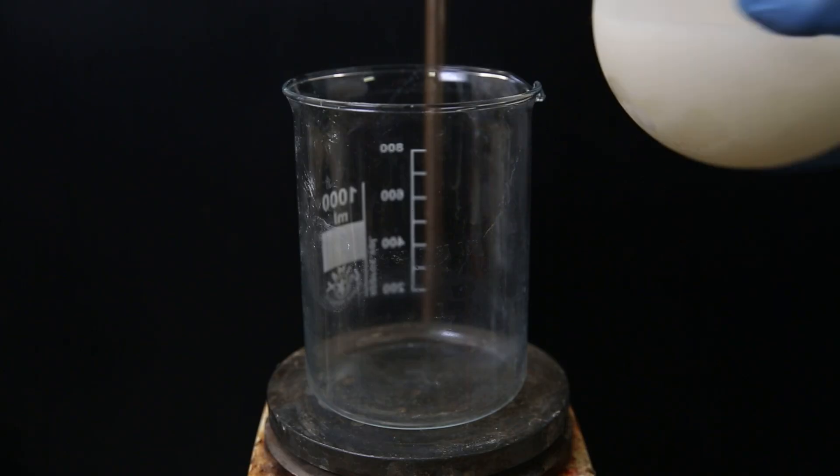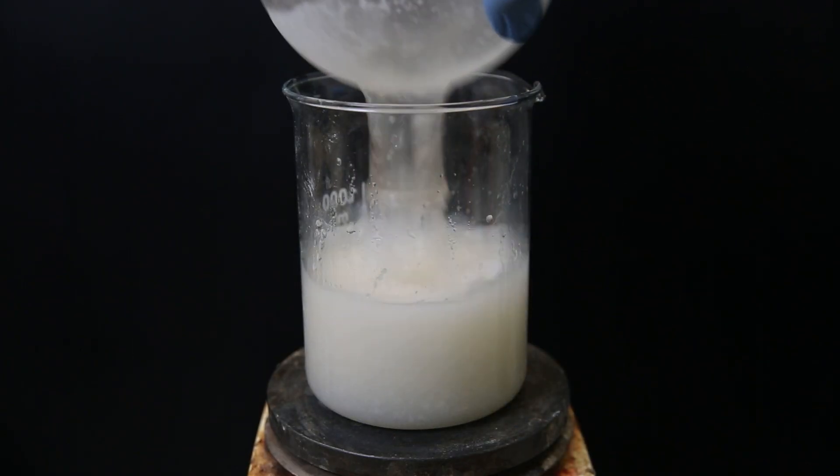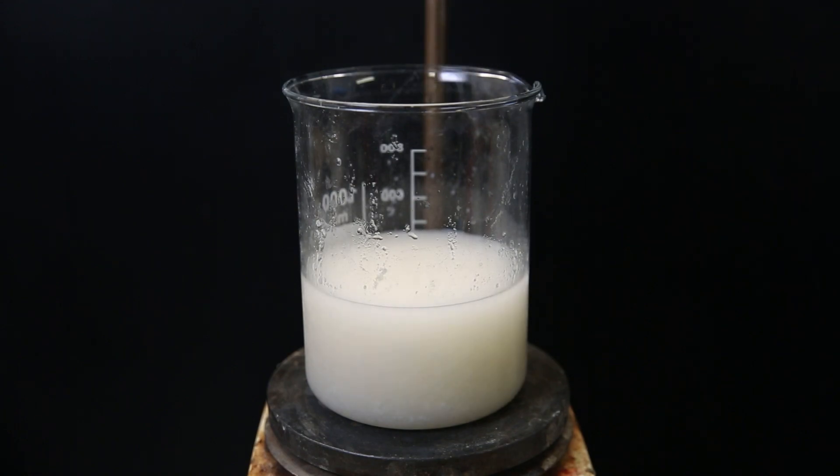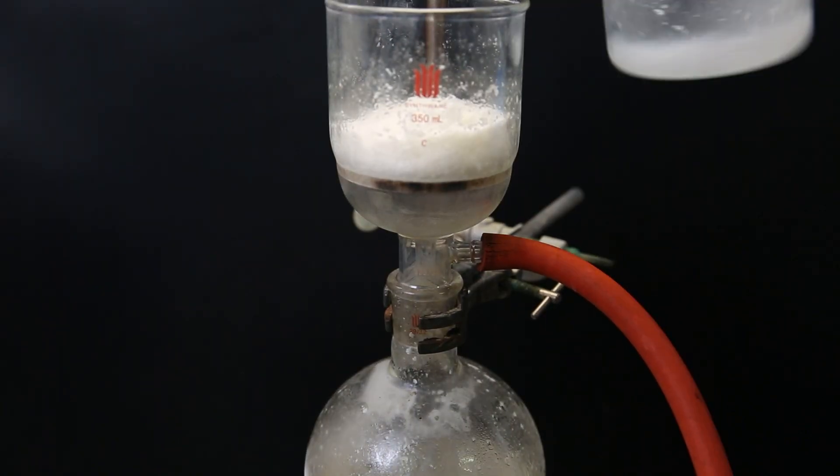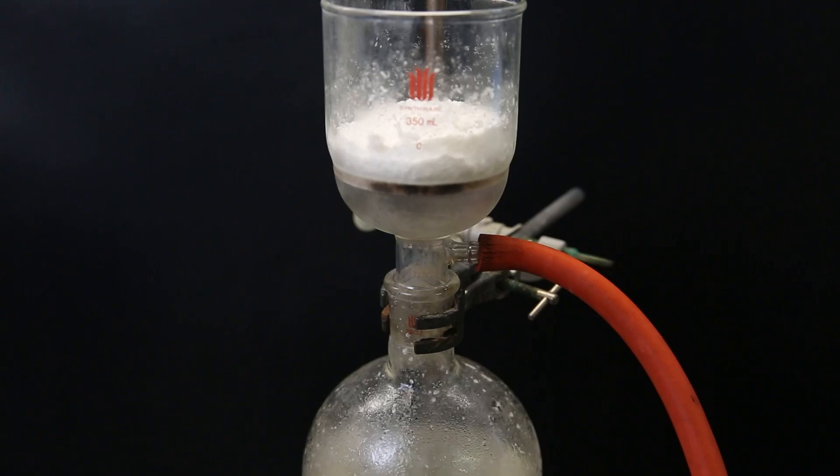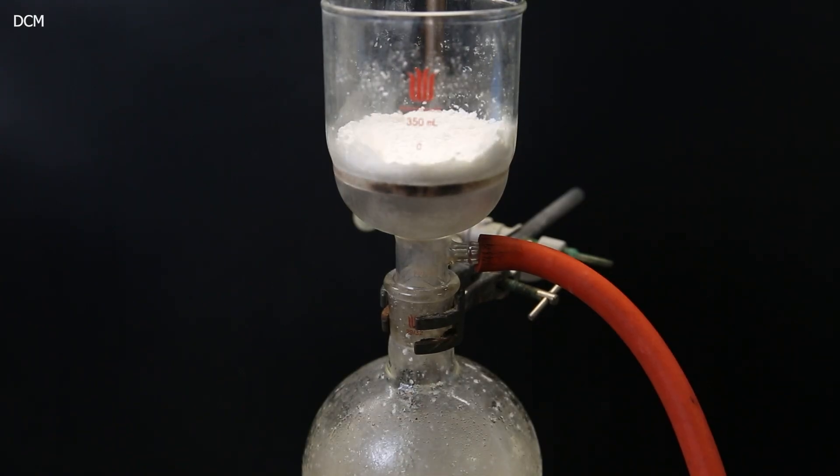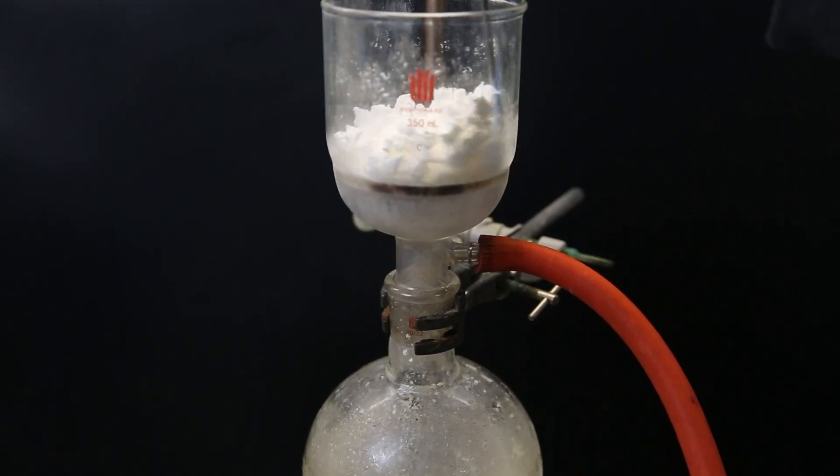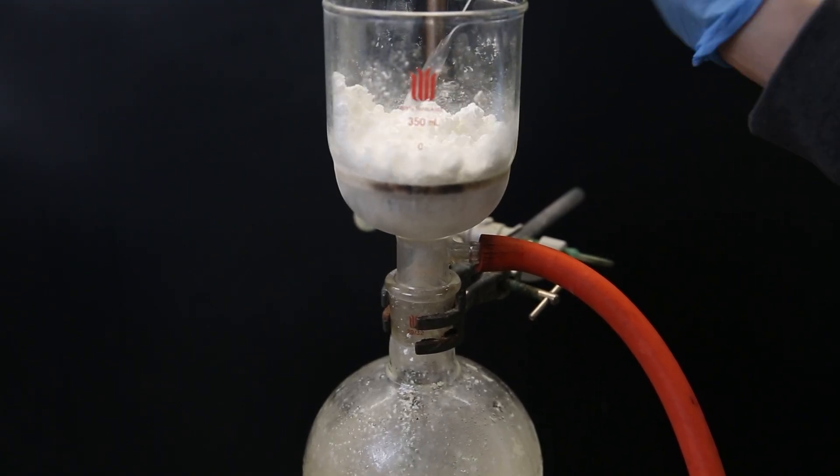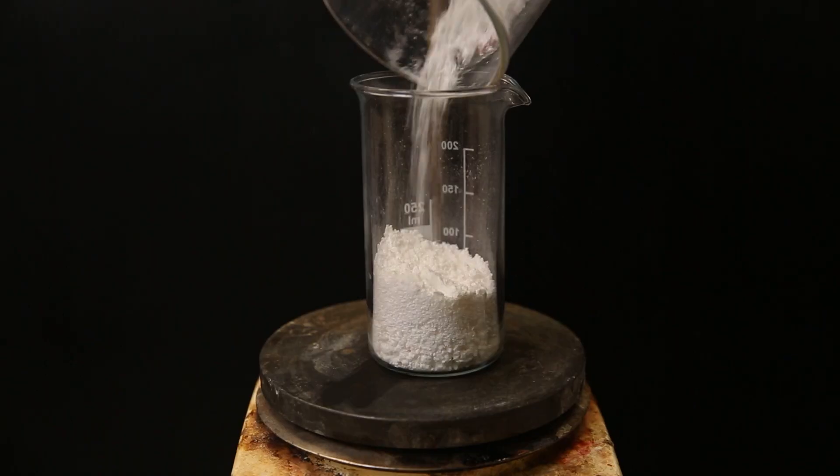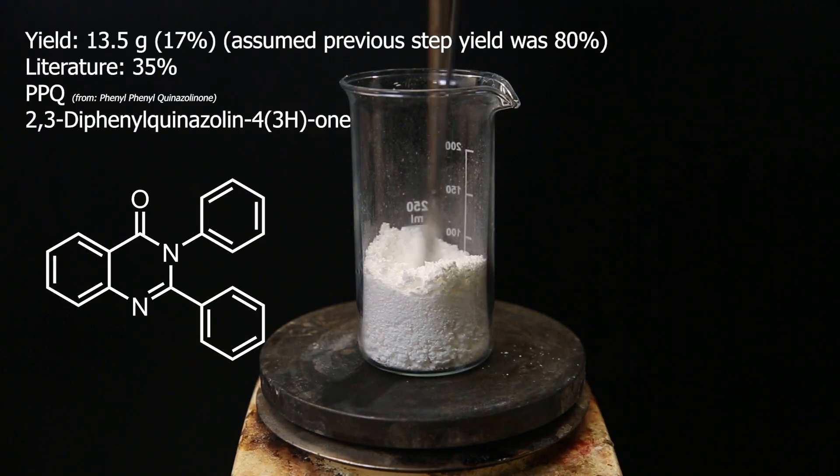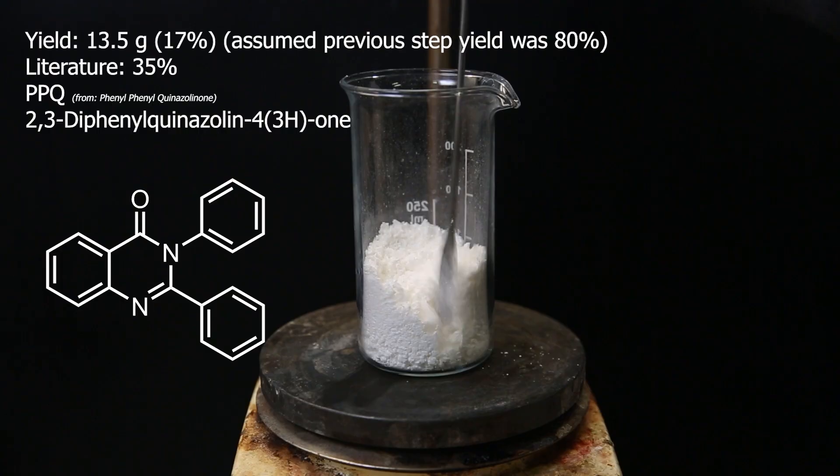It worked, and I transferred it to a beaker because I want to use this flask for the filtration. I then set it up for vacuum filtration to collect all the solid. To remove the toluene, which is a lot more annoying to evaporate, I wash it with DCM, which will carry it away. I let it dry on the filter for a while and then move it on to a beaker, giving a pure yield of 13.5 grams of PPQ, which is about 17%.